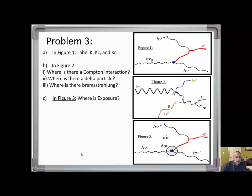For part E, what are the units of kerma? They are the same units as dose: joules per kilogram, or gray.